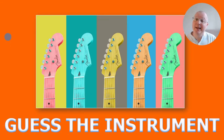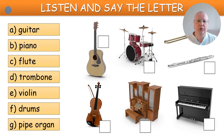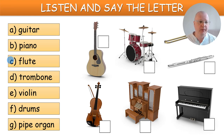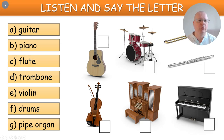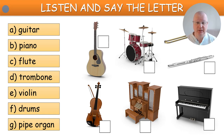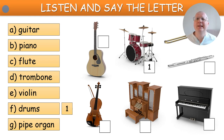Guess the instrument — the next exercise. Students need to listen to the instrument and say the letter and the instrument if they can. Weak students say the letter, strong students say the instrument. By this point in the lesson, I think all students will be able to name the instruments. You click, listen, ask 'what instrument is that?' — they say F or the drums, or the piano. You click next and they see the answer confirmed.